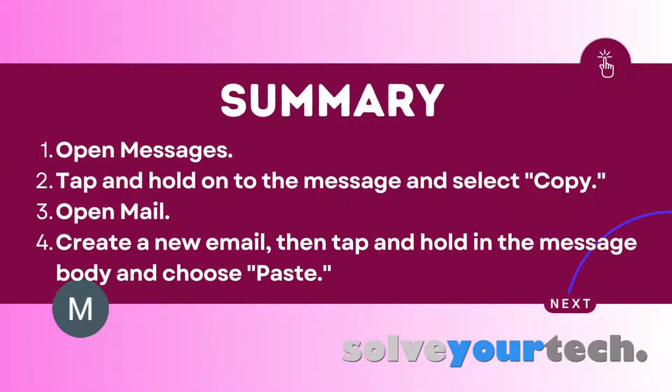To summarize: if you have a text message that you want to send in an email, you can open the Messages app, tap and hold on the message and choose copy, then open the Mail app and create a new email, then tap and hold in the message body and choose the paste option.